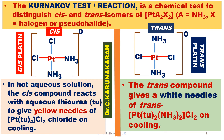Kurnakov's test or reaction is a chemical test or assay to distinguish between cis and trans isomers of a square planar platinum complex of the form A2X2, where A is ammonia and X is a halogen or pseudo halide such as SCN, CN, etc.